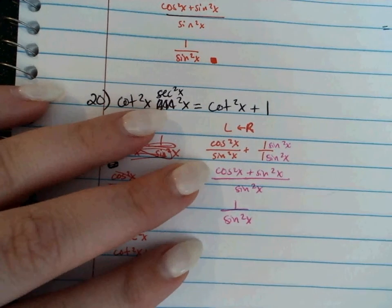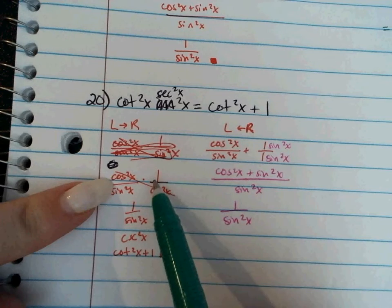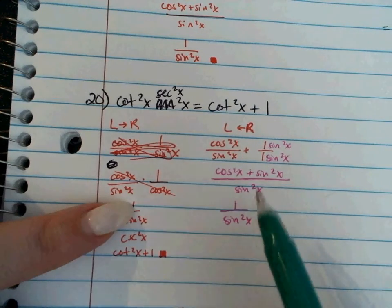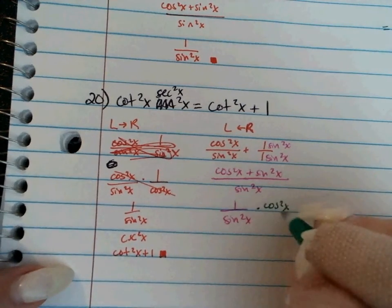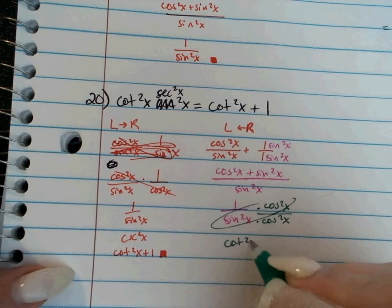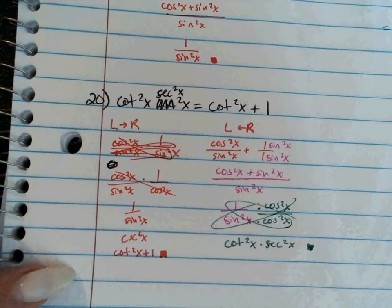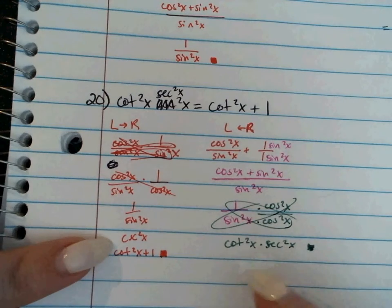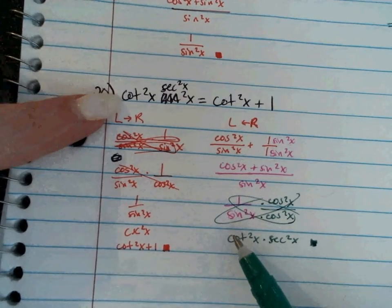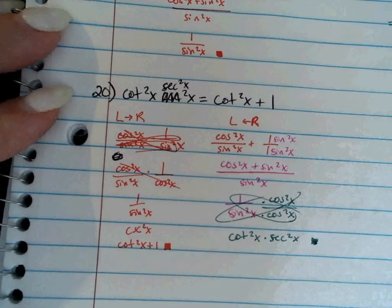If going right to left — trying to get to cotangent squared times secant squared — I have 1 over sine squared. Cotangent squared is cosine squared over sine squared, and secant squared is 1 over cosine squared. So going left to right, the cosine squares cancel. Going right to left, I'd need to multiply top and bottom by cosine squared to manifest them, letting one part be cotangent squared and the other be secant squared. Going left to right is straightforward; going right to left requires creating those cosines.